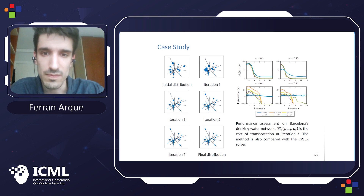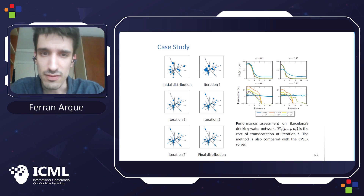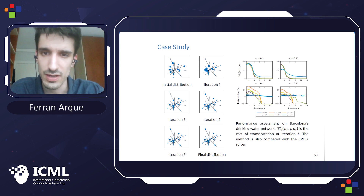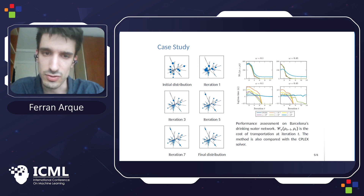Finally, as an example, here we show a simulation on the drinking water network of the city of Barcelona in Spain, and on the right we have a comparison of the method with increasing values of the regularization, and also with the solution obtained with the CPLEX solver with no regularization. We also do it with two different weights, giving more preference to one distribution or the other.